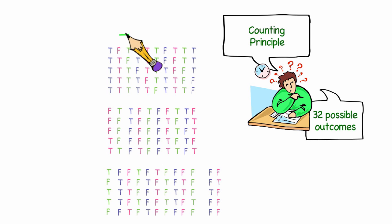I could also use the counting principle. There are five questions, and there are two choices for the first question, two choices for the second, two for the third, two for the fourth, and two for the fifth question. And I could write that as two to the fifth, or when we multiply that out, we get 32, just like before.